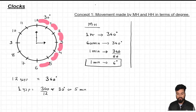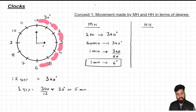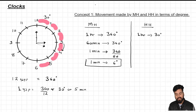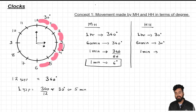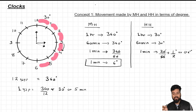Now let's do the same calculation for the hour hand. In the same one-hour duration, the hour hand would be pointing at 4, so it moves by 30 degrees in one hour. To find the movement in one minute: 30 divided by 60 gives half a degree, or 0.5 degrees. So in one minute, the hour hand only moves by 0.5 degrees. This is very crucial — please remember the speed of the hour hand per minute is 0.5 degrees.